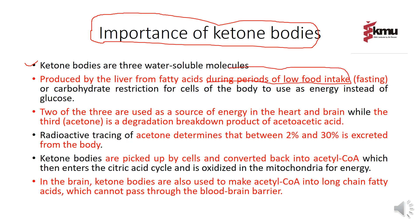When we have sufficient glucose available, carbohydrate restriction forces the body to use other energy sources instead of glucose. For example, in diabetes mellitus, the body cannot utilize glucose properly. In this condition, the patient presents with elevated ketone bodies. Two of the three ketone bodies are used as a source of energy in the heart and brain.